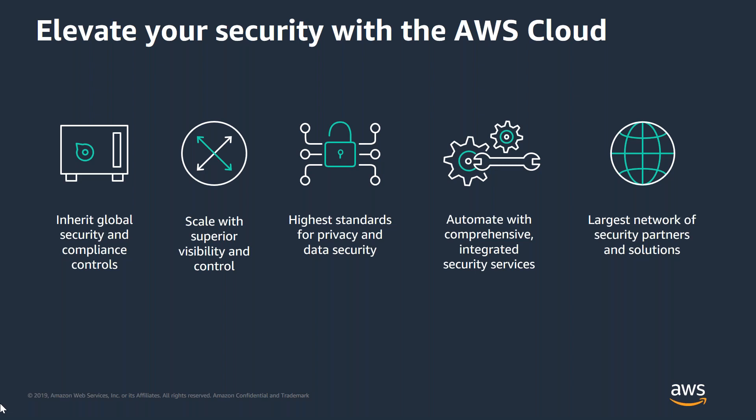Security at AWS starts with our core infrastructure — custom-built cloud designed to meet the most stringent security requirements in the world. Our infrastructure is monitored 24x7 to ensure confidentiality, integrity, and availability of our customers' data. The same world-class security experts who monitor that infrastructure also build and maintain a broad selection of innovative security services, which can help you simplify meeting your own security and regulatory compliance. As an AWS customer, regardless of your size or investment, you inherit all benefits of our experience tested against the most stringent third-party assurance frameworks.